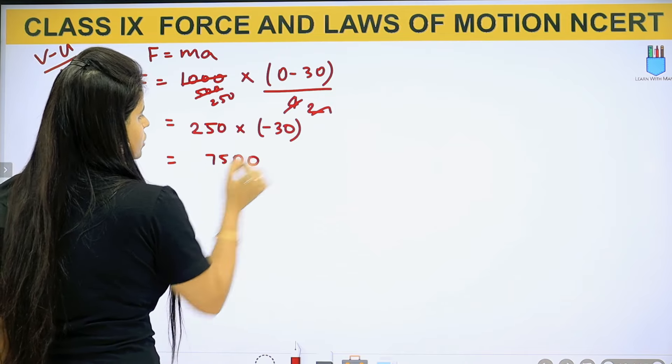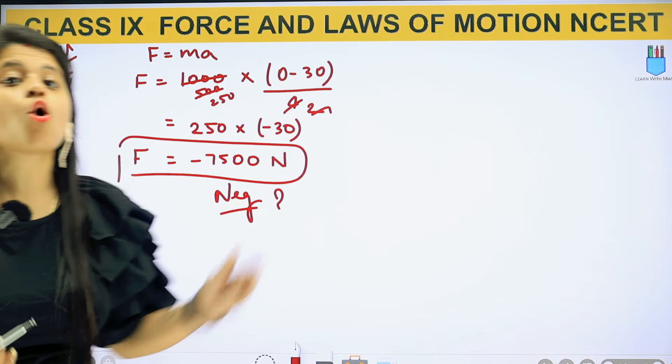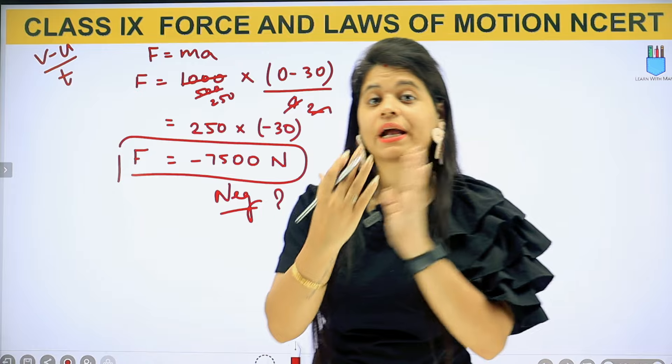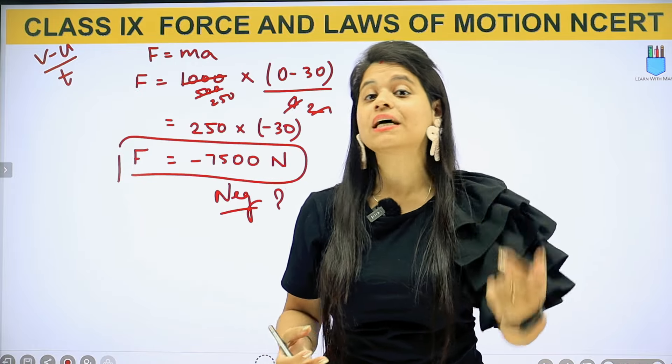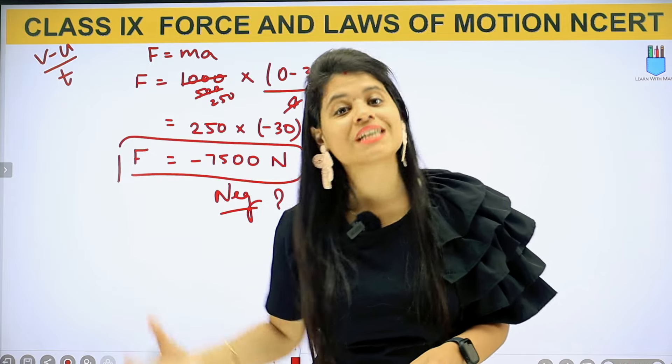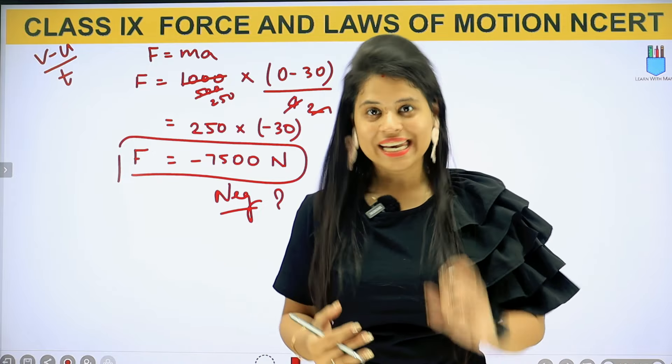This is negative. Why is negative? Negative is because force is in opposite direction. When you are braking, one thing is in motion. If you are braking and stop, you are taking it to rest. What is our force here? It's in opposite direction. That is why it is negative.